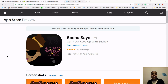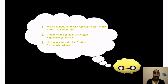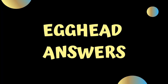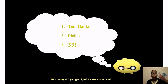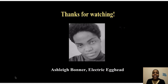Now it's time for the Fun Activity Egghead Exam — the exam you haven't studied for! Number 1: Which famous actor was rejected to play Mario in the live action film? Number 2: Which online game is the longest supported game ever? Number 3: How many consoles has Madden NFL appeared on? Answers: Number 1 — Tom Hanks was rejected to play Mario because he didn't have enough clout. Number 2 — Diablo is the longest ever supported game, supported for 20 years. Number 3 — Madden NFL has been on 33 consoles. How many did you get right? Leave a comment below. Thanks for watching.